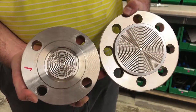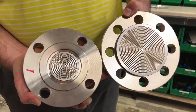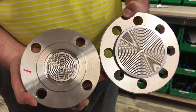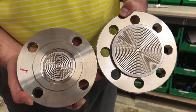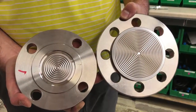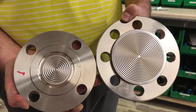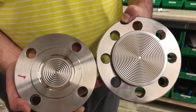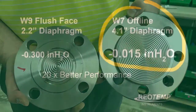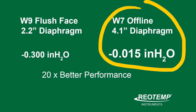The W7, with its 4.1 inch diaphragm, has an effective surface area three and a half times larger than the flush face seal. That added surface area makes the diaphragm much more sensitive and more able to absorb fill fluid expansion without exerting a false pressure onto the transmitter sensor.